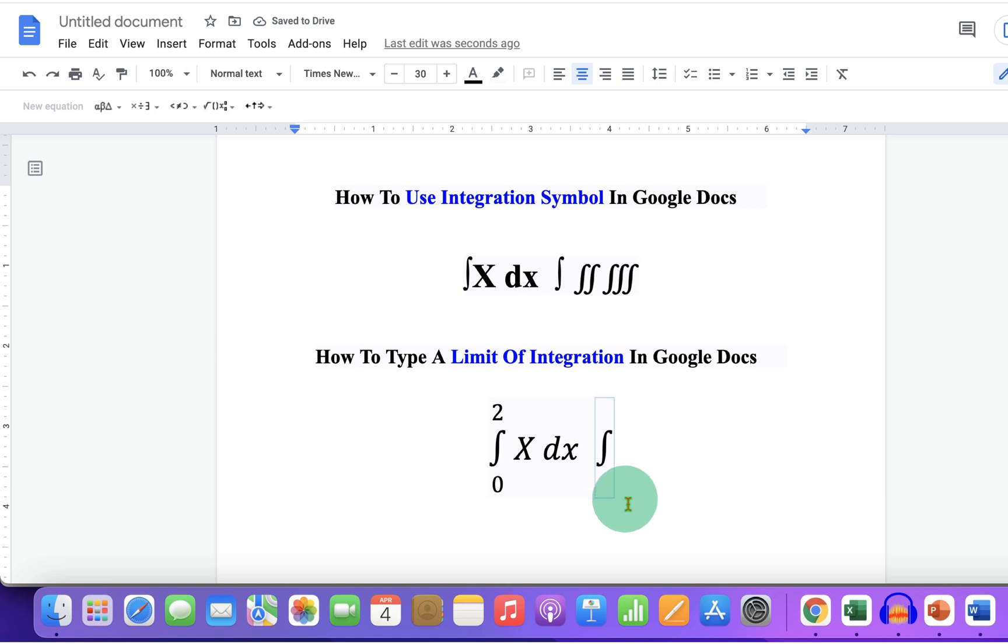Now you will see the cursor at the bottom of the integral symbol. Just type the first limit. Then press forward arrow key and the cursor will go at the top of the integral symbol. Then type another limit.